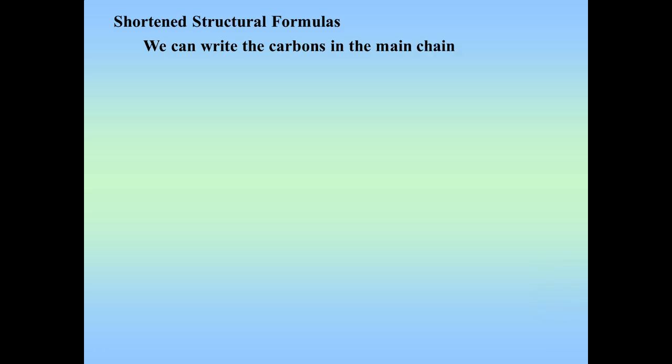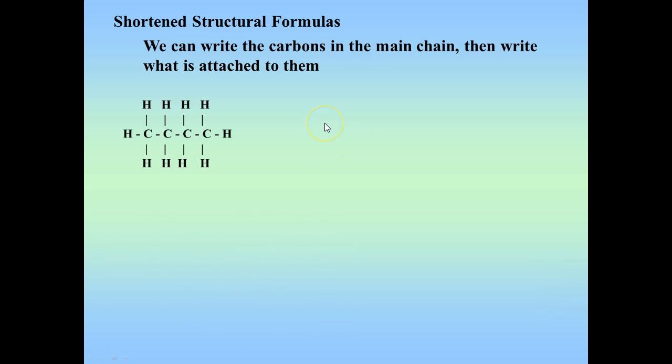You may have noticed in those last examples there were a lot of hydrogens floating around getting in the way. So we've come up with what's called a shortened or condensed structural formula to make it easier to look at complicated hydrocarbons. We write the carbons in the main chain, then write what's attached to them, instead of drawing a full structural formula showing every hydrogen.